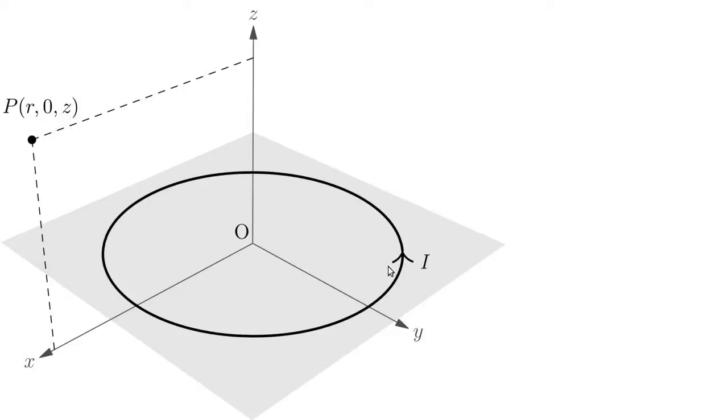The current loop is in the xy plane and it has a current of i flowing through it in a counterclockwise direction. Now the way we're going to find the magnetic field is by first finding the magnetic vector potential.